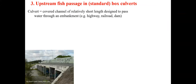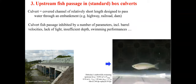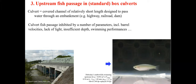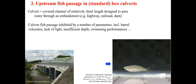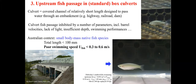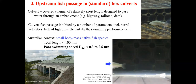Let us look at hydraulic modeling in the context of upstream fish passage in standard box culverts. A culvert is a covered channel beneath a road designed to pass water. It has been well known that culverts adversely impact fish passage for a number of reasons, all closely linked to the targeted fish species. In the context of this talk, we are focusing on small body mass native fish species and juveniles of other species — fish with a total body length of less than 100 to 150 millimeters and a swimming speed of less than 0.3 to 0.6 meters per second.